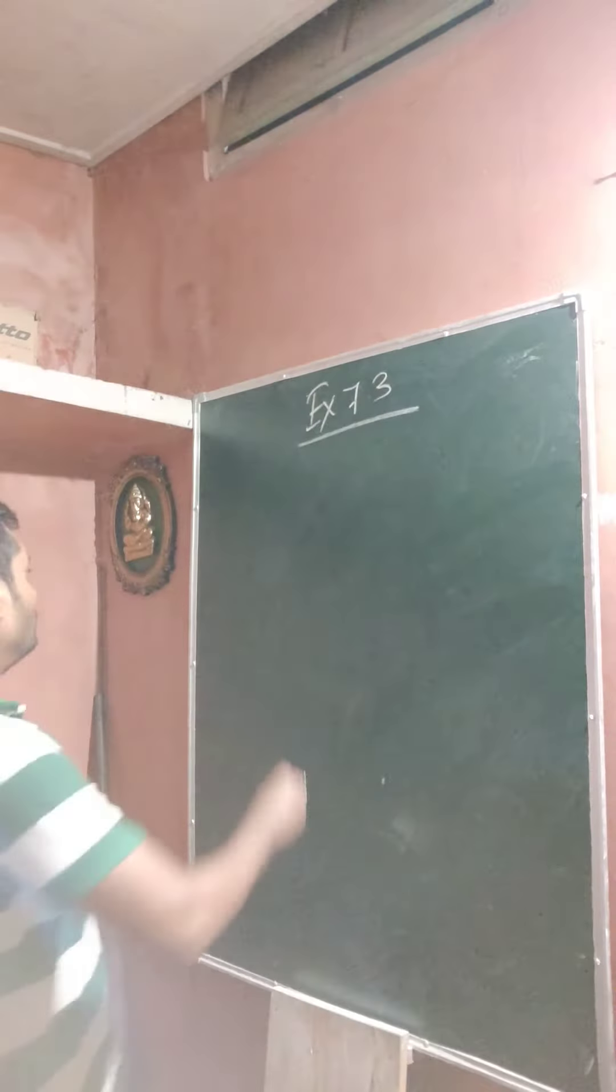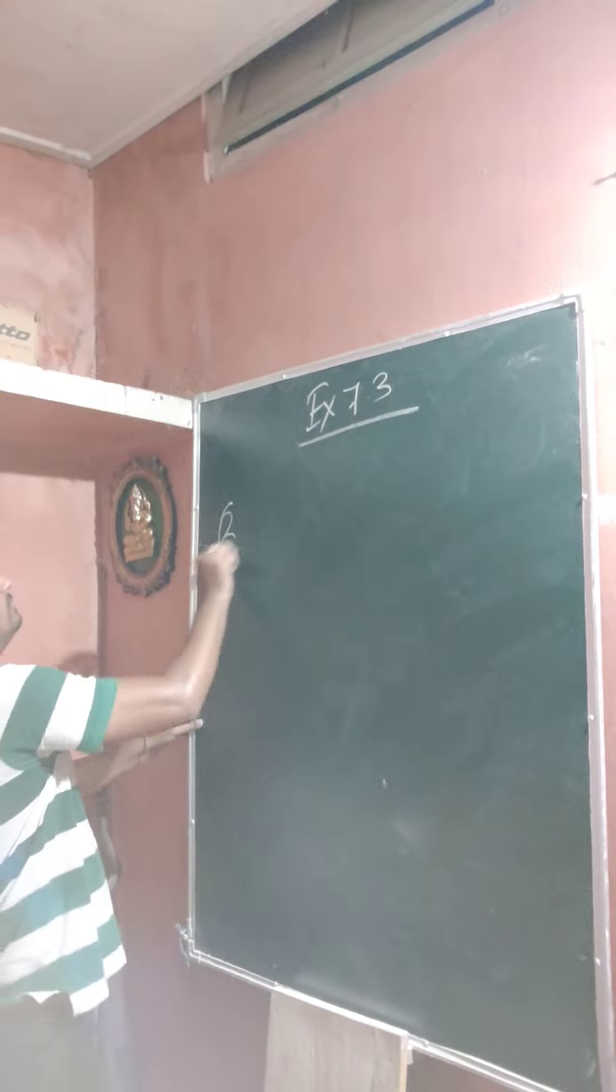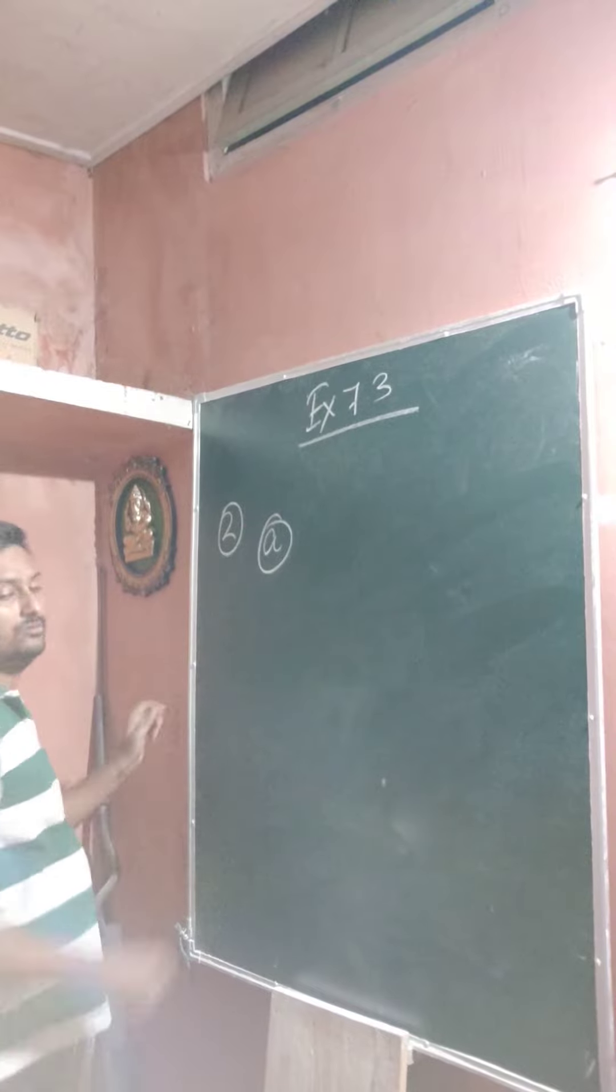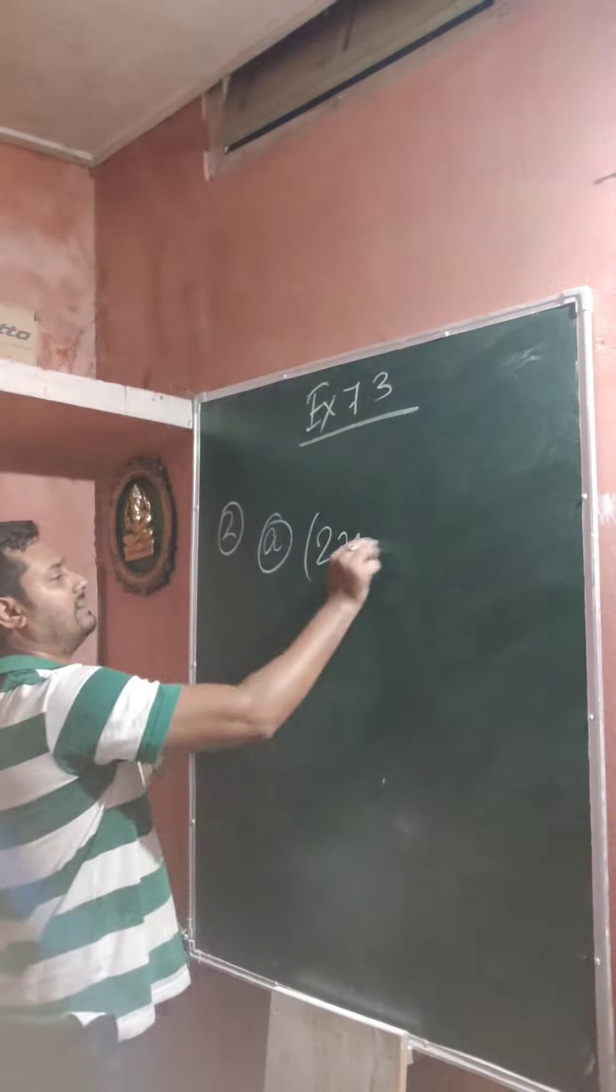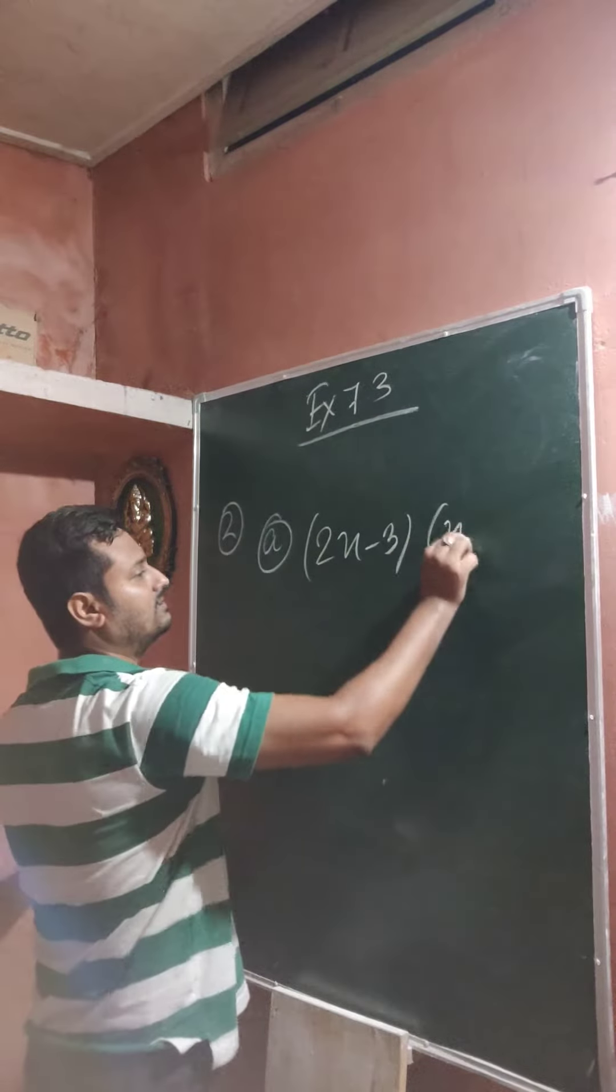So question number 2. Question number 2 is binomial into binomial. So A is what? 2x minus 3 whole into x plus 4.